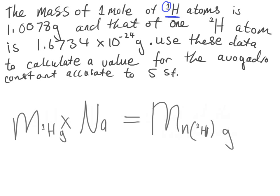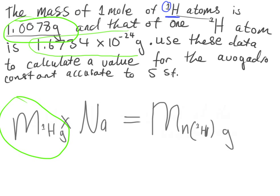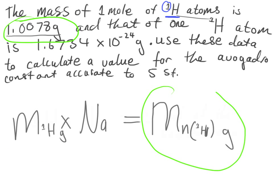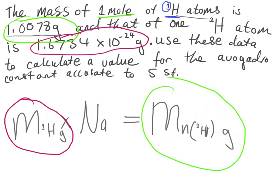In order to find Nₐ, let's think about what values we know. The question has told us the mass of one mole of this isotope — 1.0078 grams — and it also tells us that of one individual atom is 1.6734 × 10⁻²⁴ grams. So this value is the mass of one individual atom of the hydrogen-1 isotope.